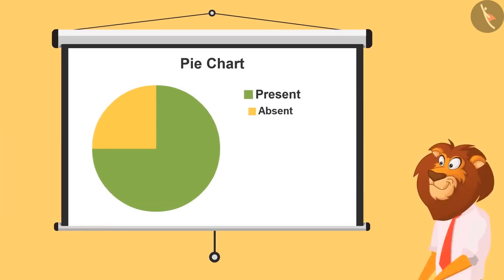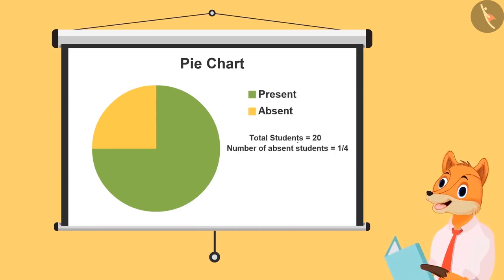These are the present kids and these are the absent kids. Here we will find out one-fourth of 20, because absent kids are one-fourth of the total chart. So, one-fourth of 20 will be, half of 20 is 10 and half of 10 is 5. So, total 5 students are absent today.